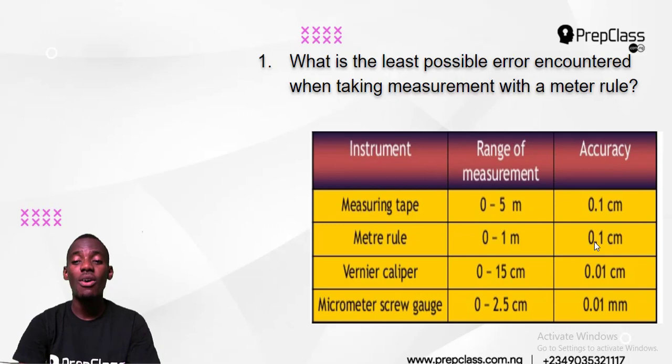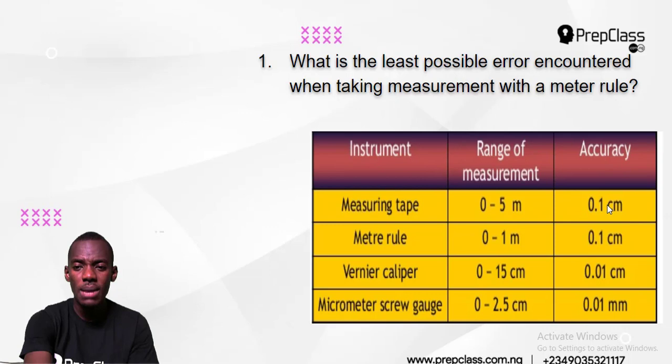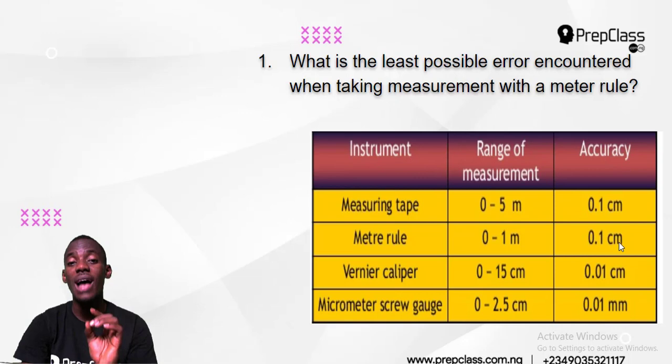The accuracy is 0.1 centimeter. But all our answers are in millimeters, so we must change them into millimeters. You know that 10 millimeters make one centimeter, so you change them into millimeters by multiplying by 10. The first one is 0.1 for a measuring tape — 0.1 times 10 becomes 1 millimeter. The accuracy for a meter rule is also 0.1, and 0.1 times 10 is 1 millimeter. Meter rule's accuracy is 1 millimeter.